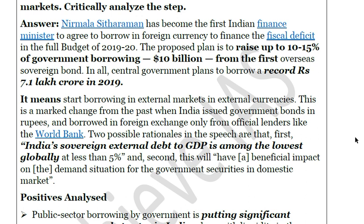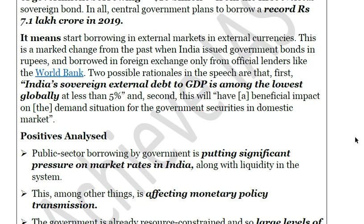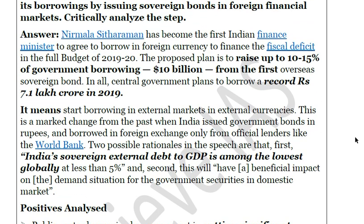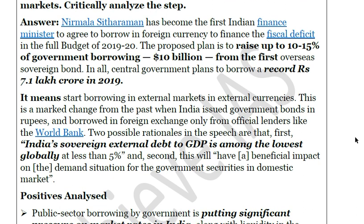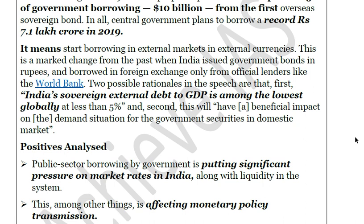When the government issues securities in foreign markets, there is still the prospect of proper demand in the domestic market. We have to look at both the positive and negative aspects. In the introduction, you don't have to write that much — we are providing it comprehensively so you can reduce it to 20–25 words. Simply refer to the fact that this budget proposed to raise 10 to 15 percent of borrowings from external sources in external currency, then shift to positives and negatives.